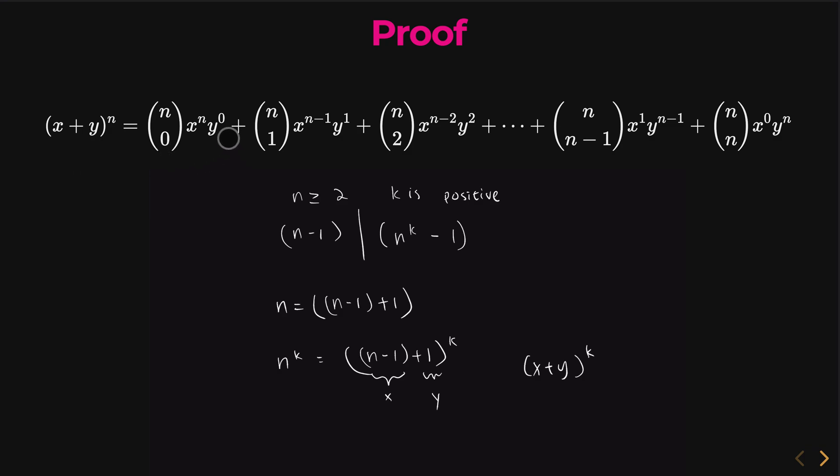See here, in the expansion, every single term has some exponent of x in it. And in our case, x is n minus 1, right? Every single term has that. It ends here, x to the 1. But here we have x to the 0, so essentially, we have no n minus 1 in this term.